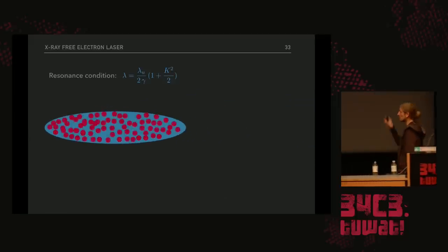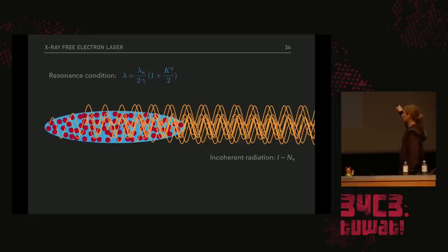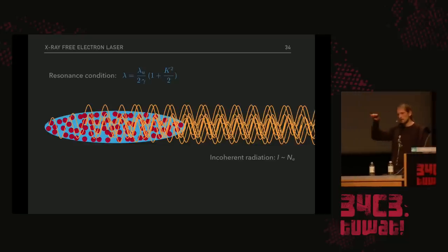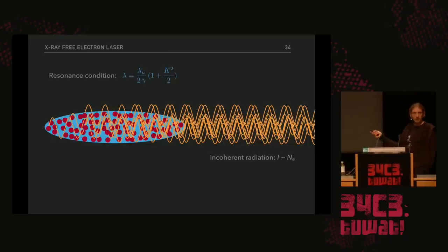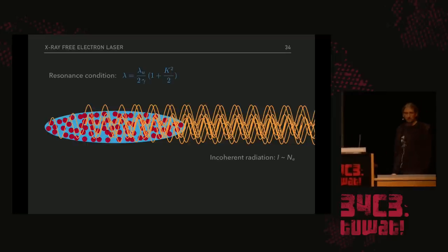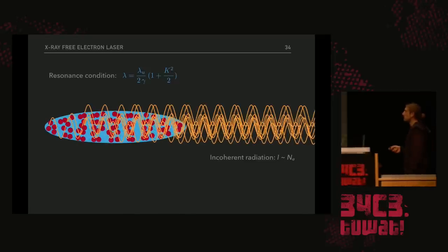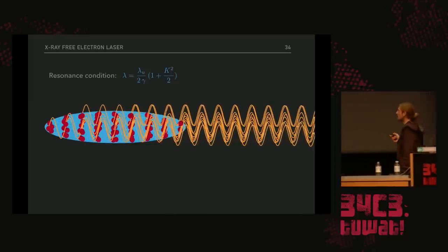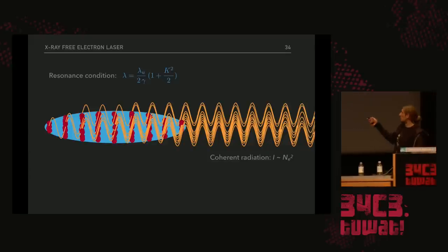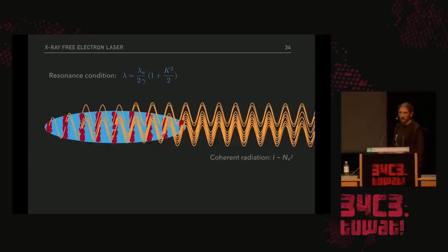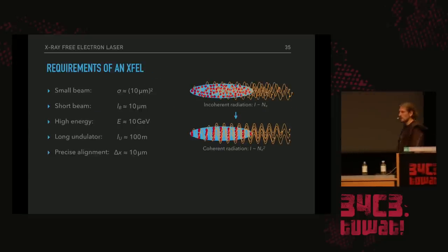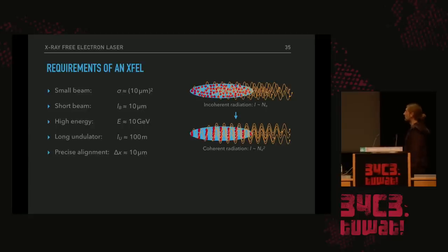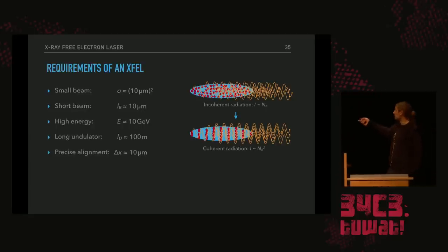Coming back to the big picture: at the beginning we start with incoherent radiation. All the electrons radiate but there is no fixed phase relation between them, and incoherent intensity scales with the number of electrons. As the bunch moves through the undulator, the self-ordering effect leads to micro-bunching on exactly the length scale of the radiation. For the wavelength satisfying the resonance condition, we get coherent radiation, and coherent radiation scales with the number of electrons squared. But it's not easy to get from incoherent to coherent radiation, especially if you want X-rays.